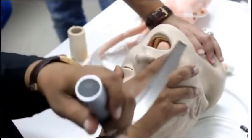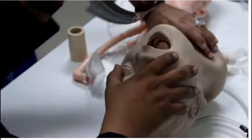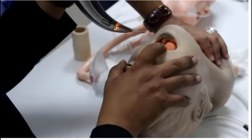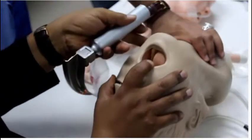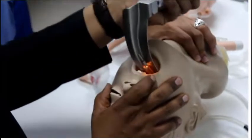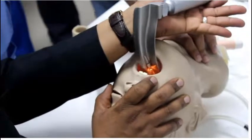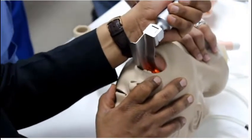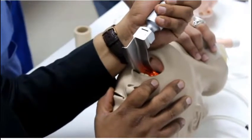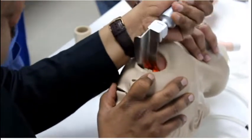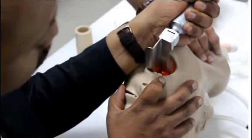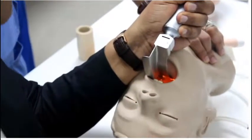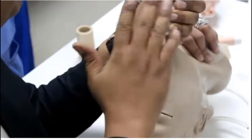You have to put the laryngoscope in your left hand and approach your patient on the right side. You have to push the tongue from the right side to the left and then descend down. The key structure here is the epiglottis. When you catch the epiglottis like this, you have to keep the laryngoscope in front of the epiglottis. Because this is the curved type, this is the Macintosh type.